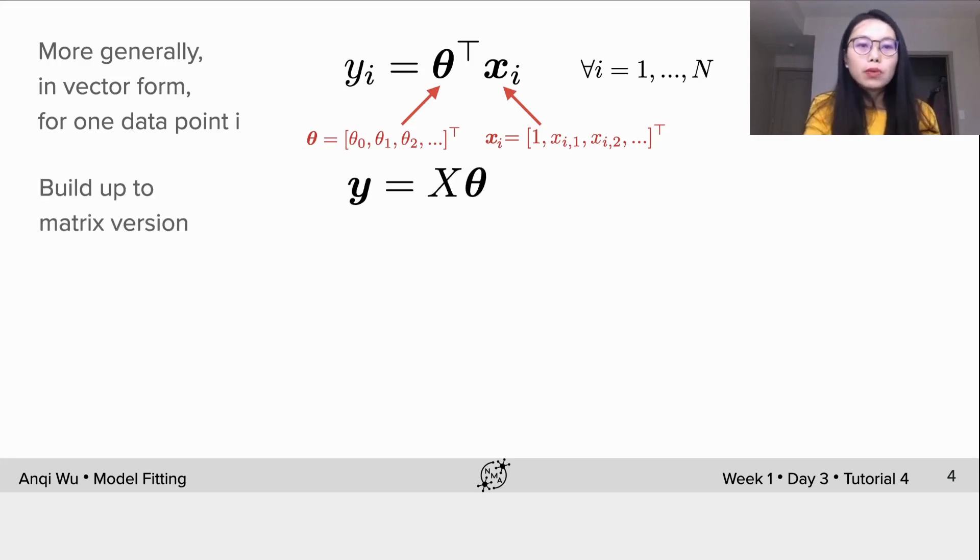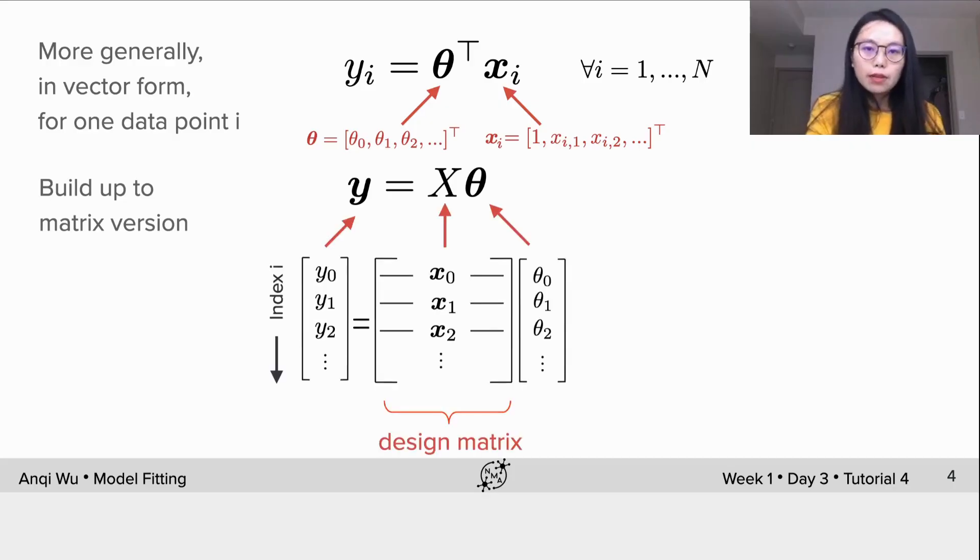We could also build it up to the matrix version. Y is capital X multiplying theta. Bold y here becomes a column vector collecting all responses. Capital X is a matrix. Each column corresponds to a feature and each row corresponds to a data point. We call it design matrix. Theta is still the same vector.